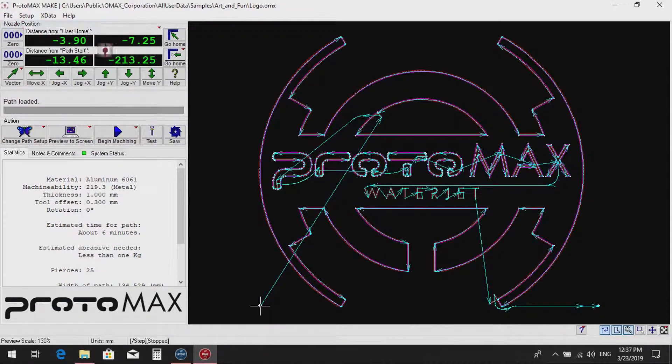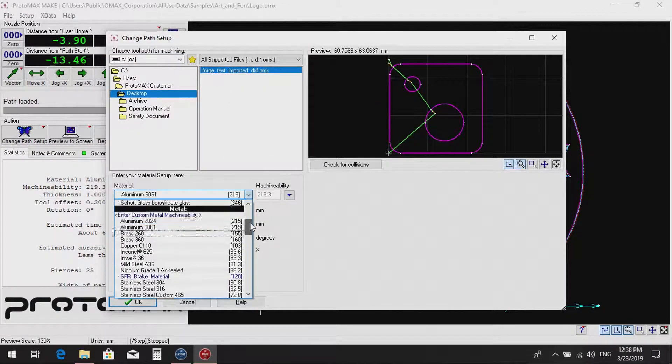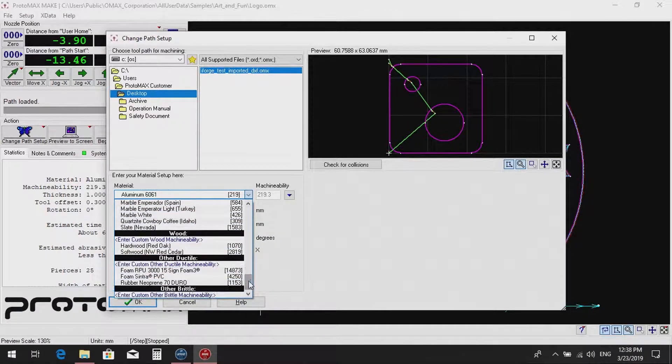Open the desired OMX file as prepared from OMX layout. Select the material to be used. The thickness and offset can also be set here.